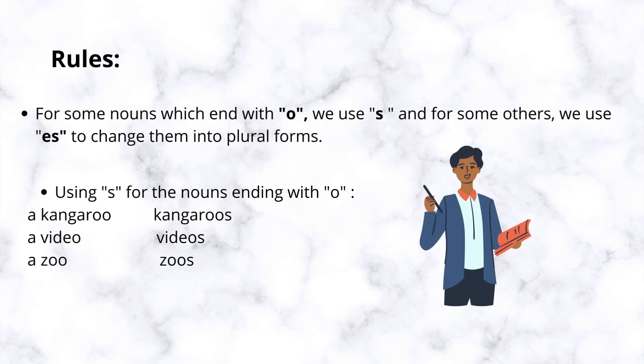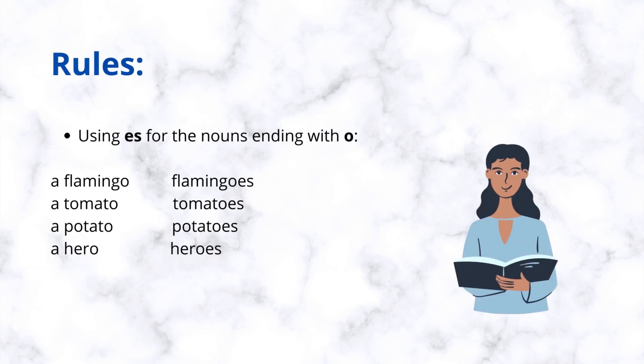For some nouns which end with o, we use s, and for some others, we use es to change them into plural forms. Using s for the nouns ending with o: a kangaroo, kangaroos. A video, videos. A zoo, zoos. Using es for the nouns ending with o: a flamingo, flamingos. A tomato, tomatoes. A potato, potatoes. A hero, heroes.